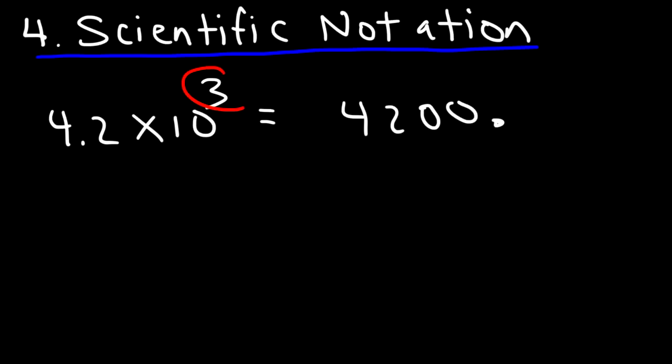So if you have a positive exponent above 10, you need to move the decimal point three units to the right, and that will give you this decimal value. Pretty much, if you see a positive exponent on a 10, it indicates a large number.